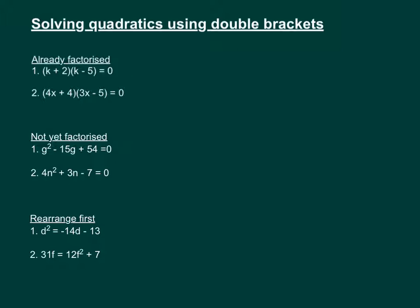So looking at this first one, we have k plus 2 times k minus 5, and that equals 0. So the idea behind how we work these out is that you've got a number times another number and that equals to 0.